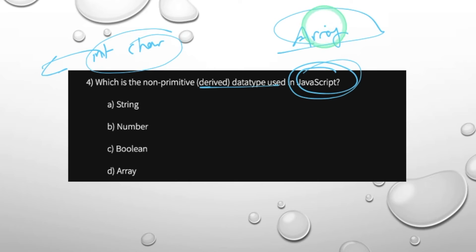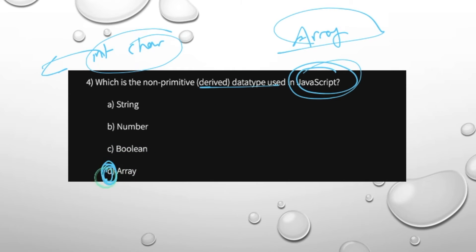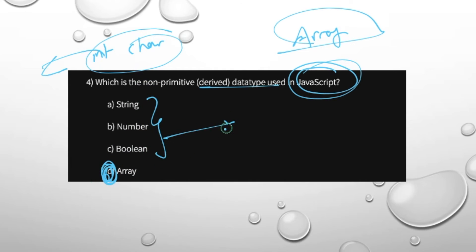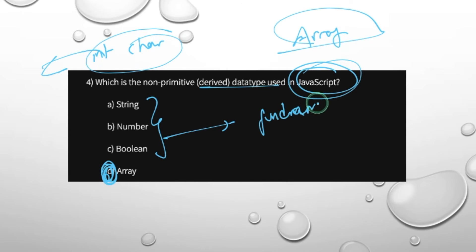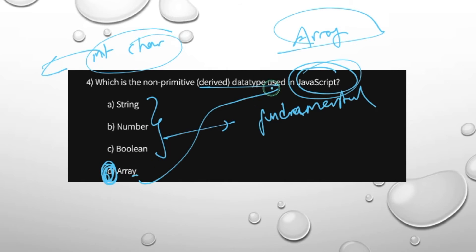An array contains multiple values, and every variable shares the same name. The array is derived and non-primitive, whereas string, number, and boolean are primitive, fundamental data types. Array is the derived data type in JavaScript.